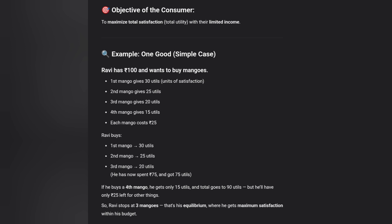Let's look at a simple example. Ravi has 100 rupees and wants to buy mangoes. The 1st mango gives 30 utils, the 2nd mango gives 25 utils, the 3rd mango gives 20 utils, and the 4th mango gives 15 utils. Each mango eaten reduces utility — that is the diminishing marginal utility. Each mango costs 25 rupees.